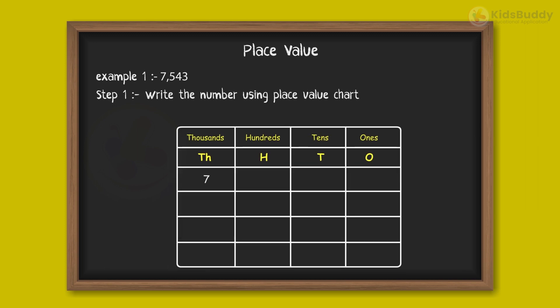The digit 7 is in the thousands column, digit 5 in the hundreds column, digit 4 in the tens column, and digit 3 in the ones column. In Step 2, decide and write the place value of each digit.